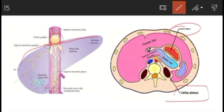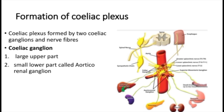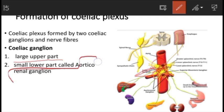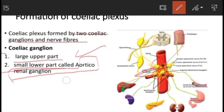Looking at the formation of the celiac plexus, it is formed by two celiac ganglia and numerous nerve fibers. The celiac ganglion in turn has two parts: a large upper part and a small lower part. The small lower part is also known as the aorticorenal ganglion.